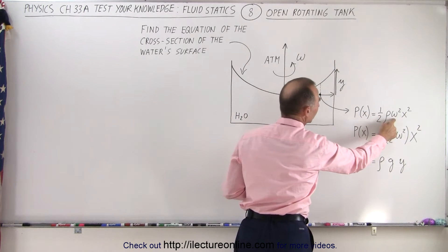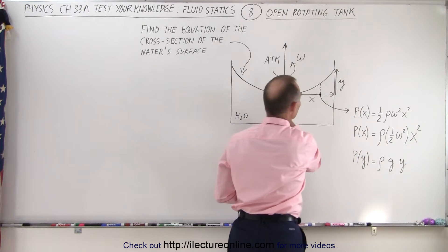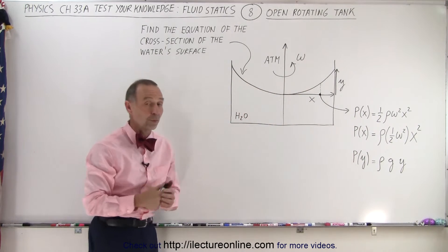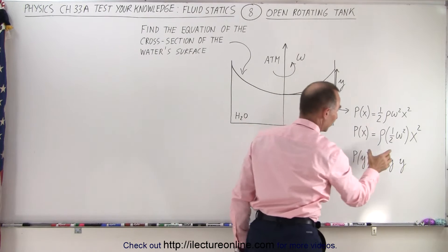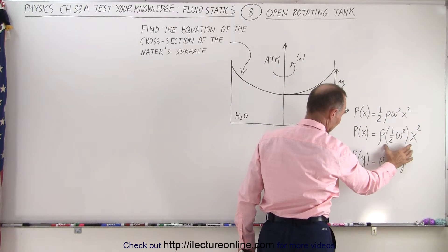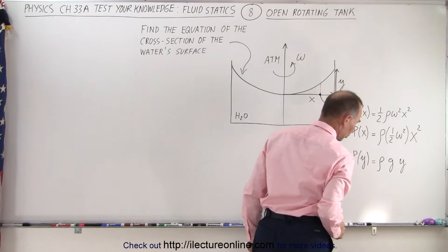that the pressure as a function of x was equal to one-half the density of the liquid, times omega squared, times the distance away from the central axis, the axial rotation squared. We can rewrite this as the density times one-half omega squared times x squared.